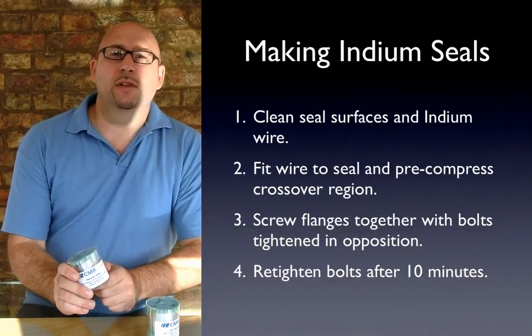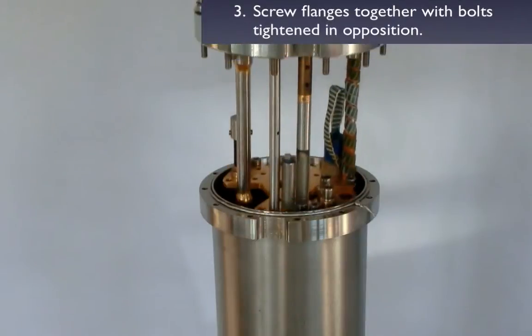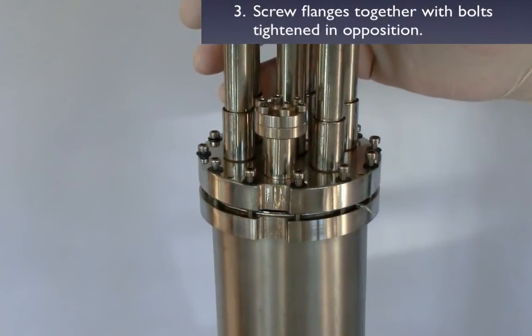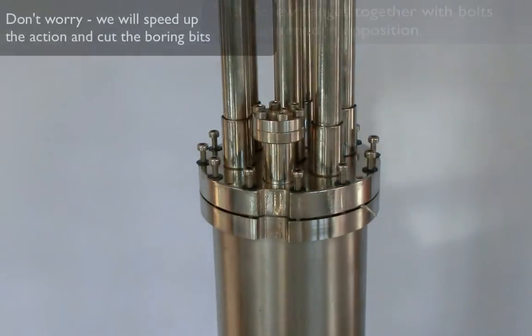With the indium wire in position, the flanges are offered up to one another. Usually, this is the vacuum can to the cryogenic insert. Ideally, these should be hanging vertically so there are no sideways forces on the flanges as you're tightening them up.